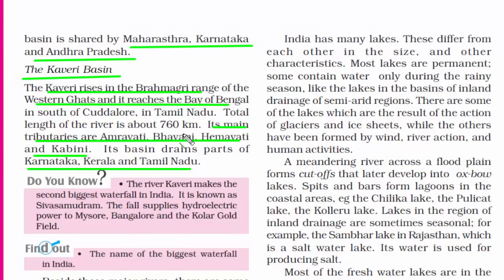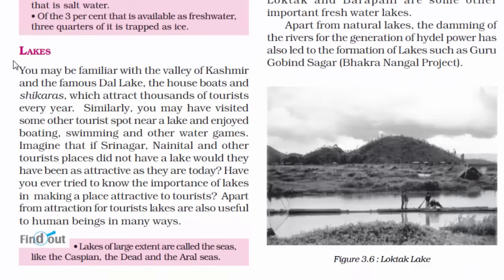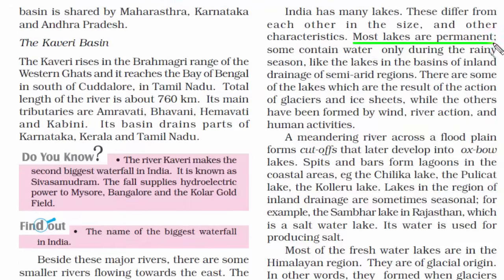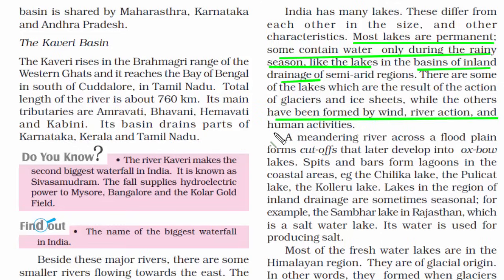With this we have covered all the rivers of the Himalayan and Peninsula regions. Now let's read about the lakes of India. There are famous lakes such as the Dal Lake in Kashmir, which is a tourist spot. Some lakes are permanent and some have water only during the rainy season. The permanent lakes are near the Himalayas because there the water supply is perennial. The temporary lakes are usually in inland drainage, in the interior of the landmass, where water can be collected due to rainfall in low-lying areas formed by wind, river action or human activities.